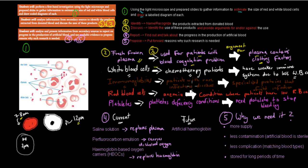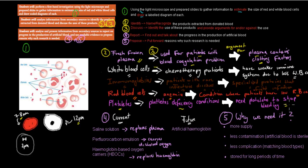Immunoglobins are used for people who have rare infectious diseases. These are specialised proteins that help fight infections, so it makes sense to give them to people with rare infectious diseases. Red blood cells are given to people who have anaemia, a condition where people have low red blood cell counts, so giving them red blood cells increases their levels and restores normal energy. Platelets are given to people with platelet deficiency disease; since platelets stop bleeding, without enough platelets the body won't stop bleeding properly, so extra platelets restore normal function.